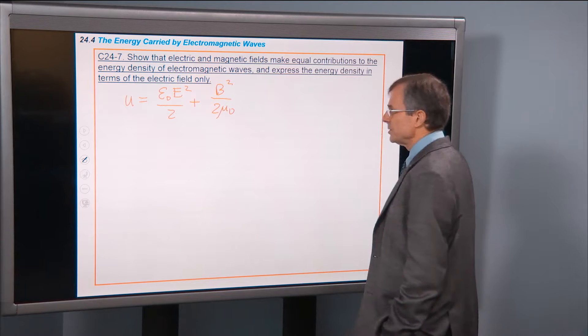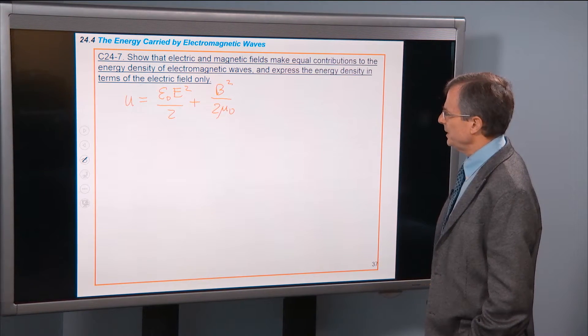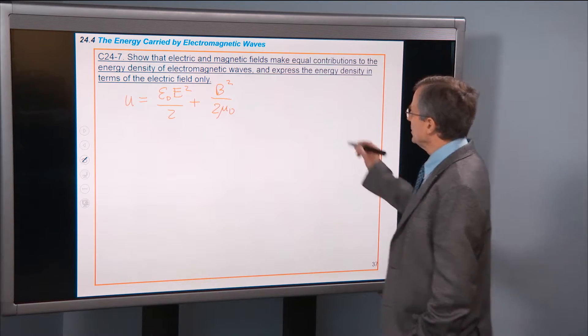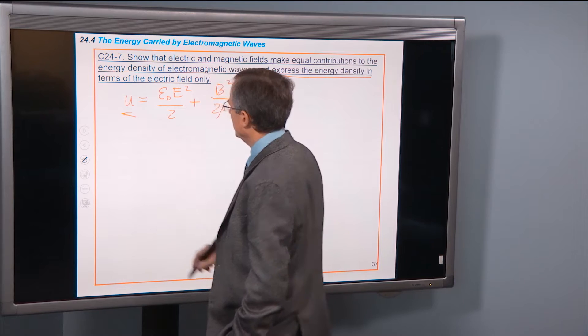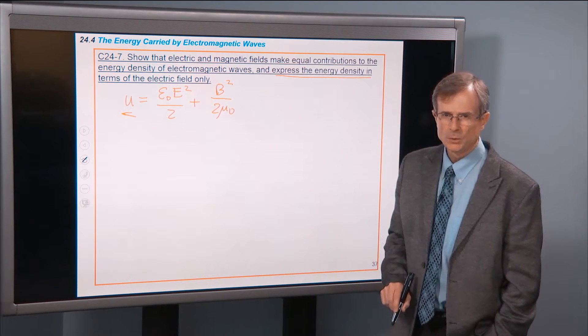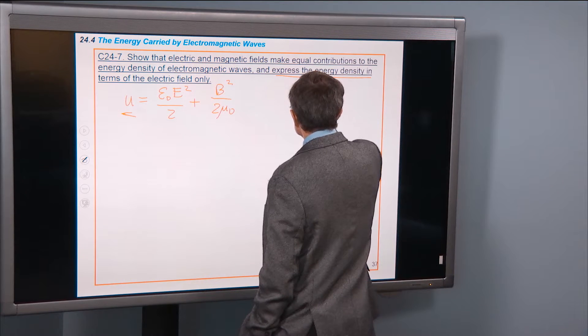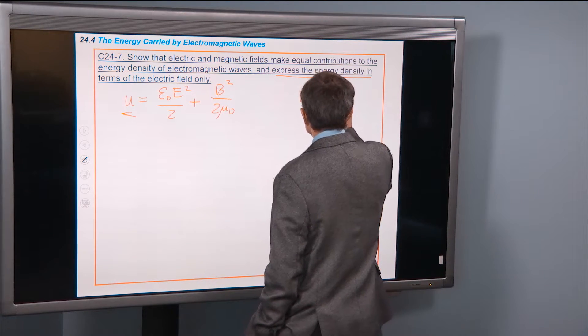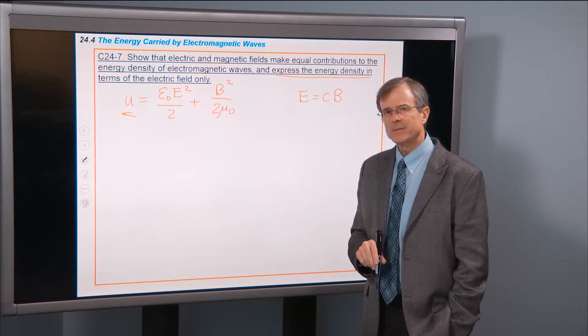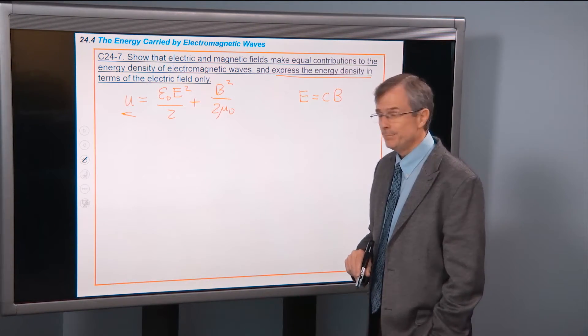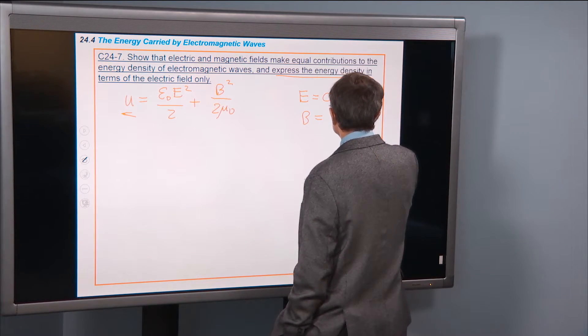We are going to take advantage of what we know about e and b. We're eventually going to want to express this energy density in terms of the electric field only. So we're going to take advantage of our knowledge that e equals c times b. But I want to get rid of b and express everything in terms of e. So let me solve this for b. It's e over c.